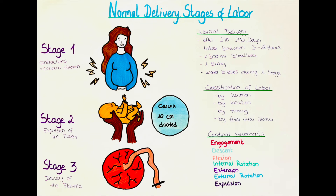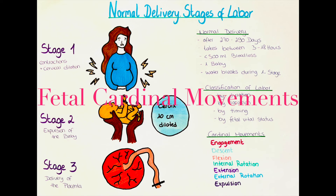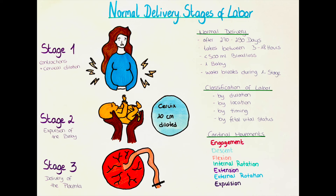During the second stage of labor, the baby goes through the fetal cardinal movements so that it can pass through the birth canal, adapting its diameter to optimally fit through the maternal pelvis, which has different measures at different levels. The seven cardinal movements are: engagement, descent, flexion, internal rotation, extension, external rotation, and finally expulsion.